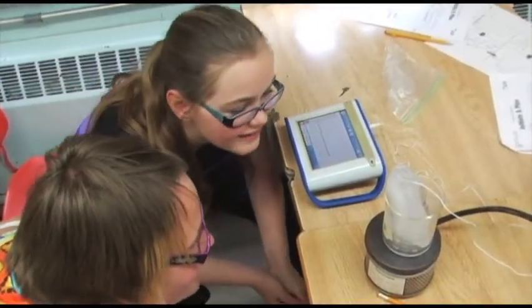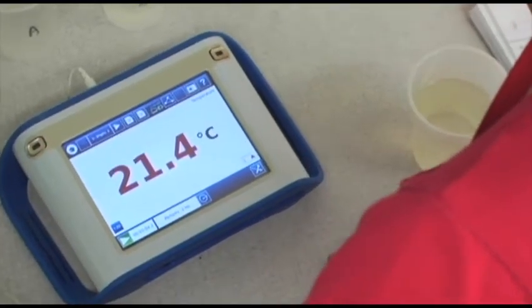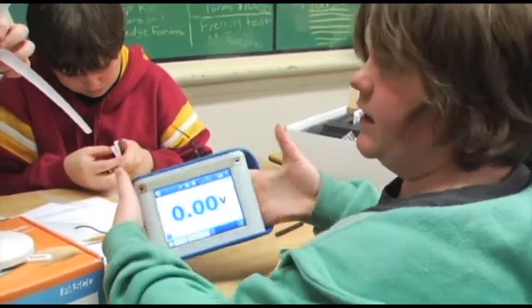The Spark Data Logger System with its sensors and software is a way of marrying software and technology so that students can actually collect really authentic data and a lot of different kinds of data. They can collect temperature settings, dissolved oxygen in liquids, pH values, heart rate, pressure.